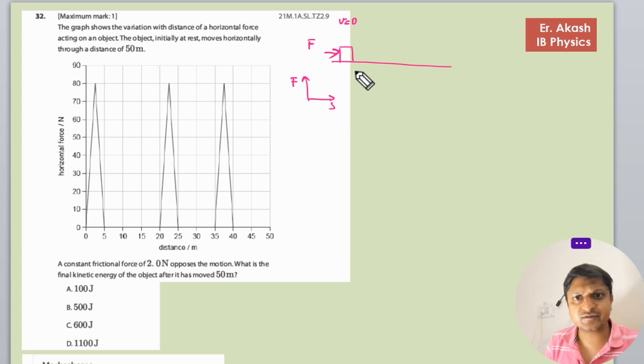It moves horizontally through distance 50. So suppose this is 50 meters and it reaches here.